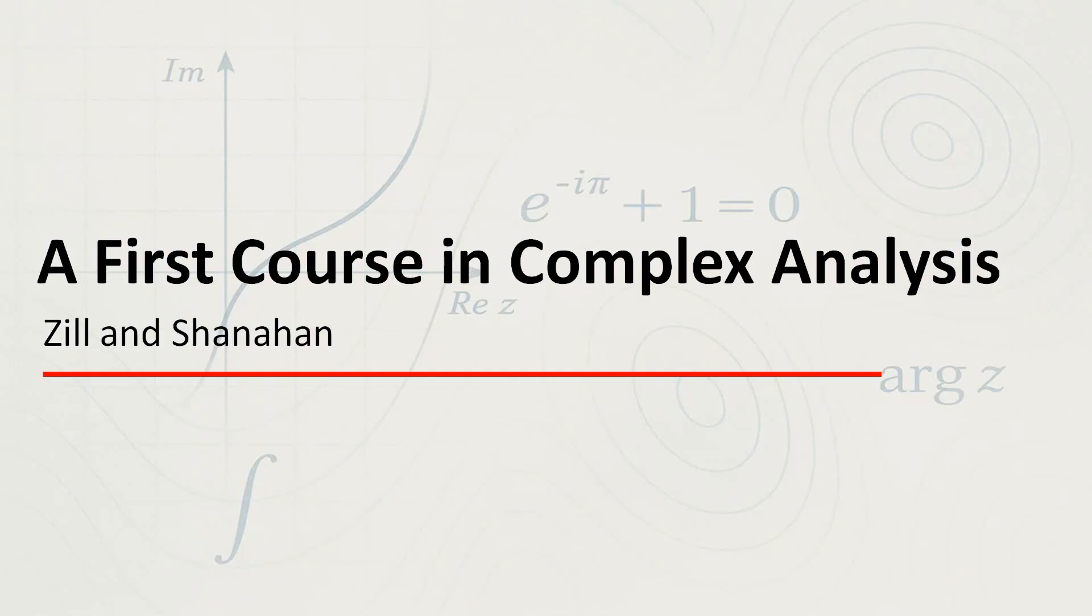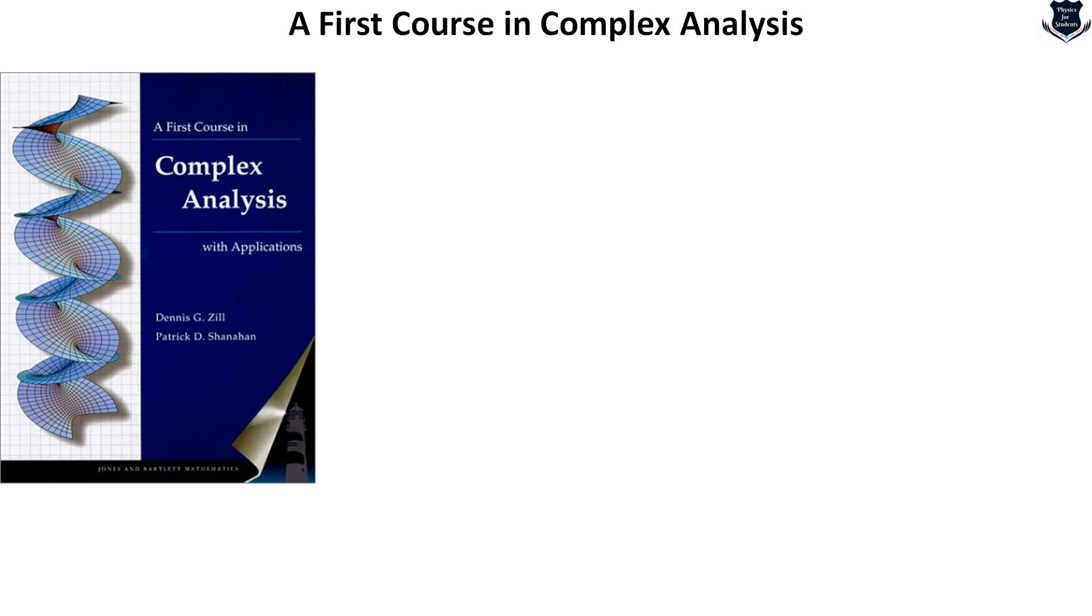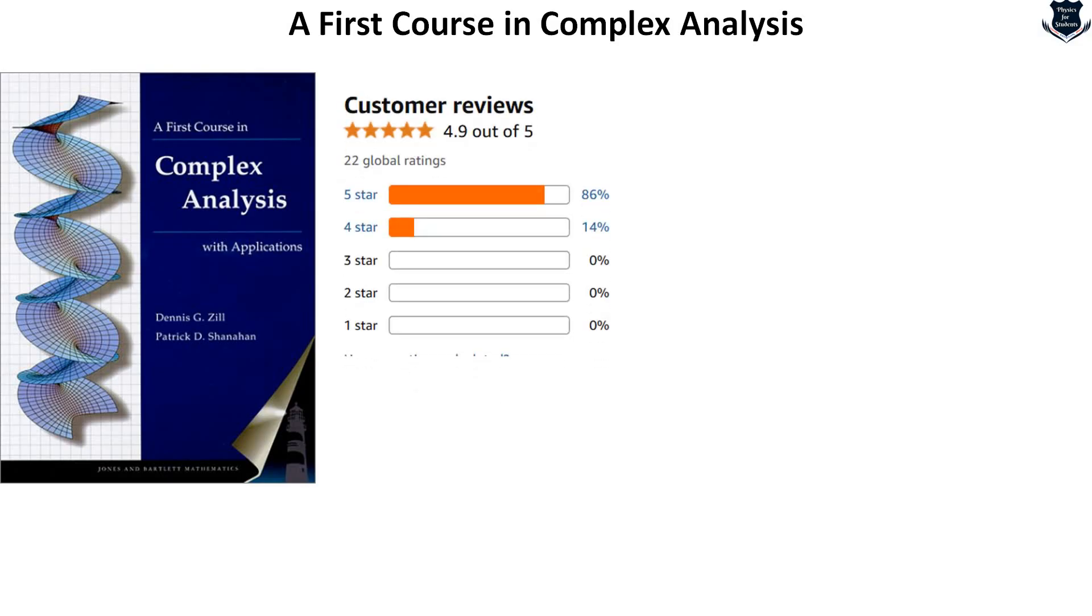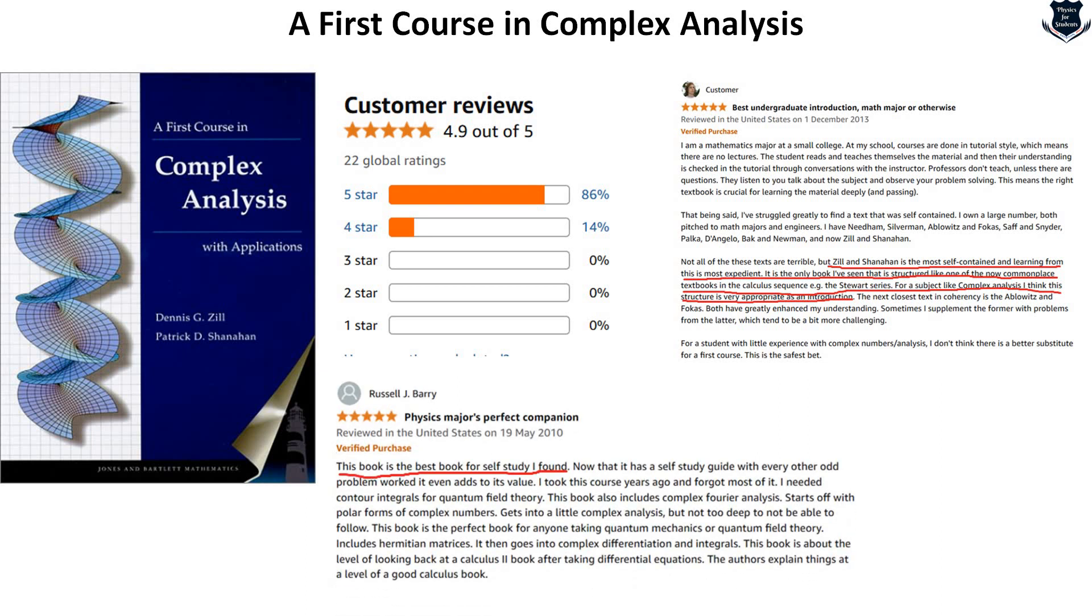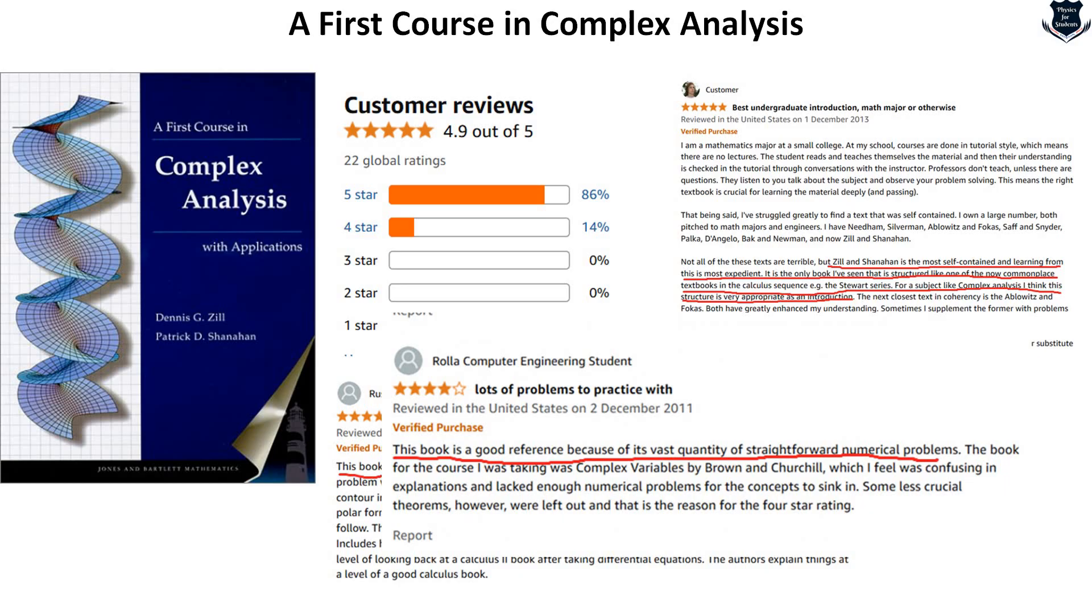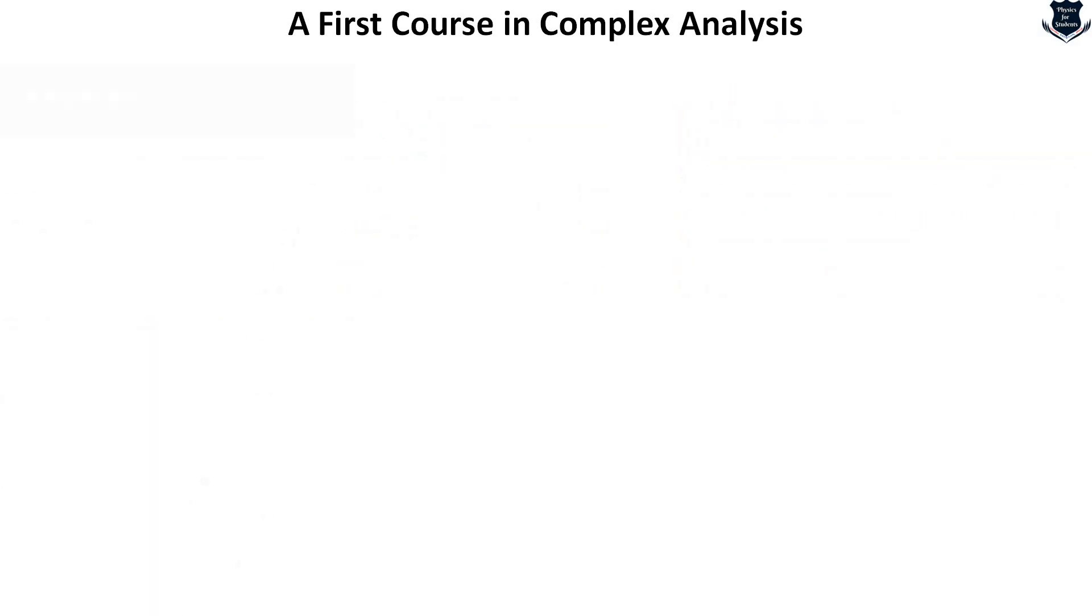What is the best book that you should learn first starting with complex analysis? I consider this to be absolutely profound, detailed and an easy book to learn. A First Course in Complex Analysis by Dennis Zill and Shannon. This is the cover of the book which is one of my favorites. I take notes, I teach in the classes based on this book to be honest. The customer reviews are fascinating. As you can see it writes, Zill and Shannon is the most self-contained and learning from this is most expedient. It is the only book structured on the very new commonplace. This is the book for self-study, for reference with a vast quantity of numerical problems. All the reviews are quite great.